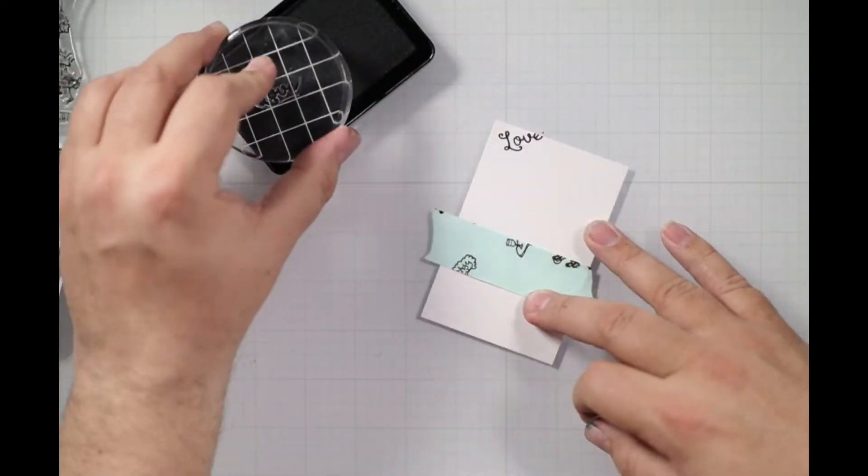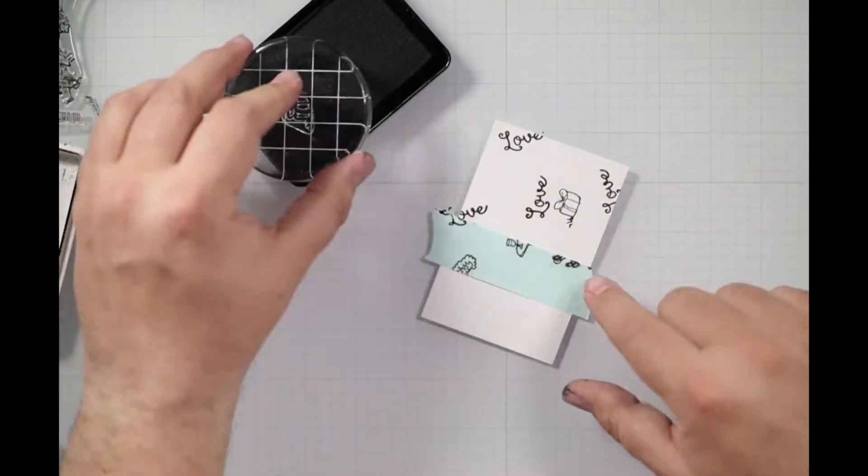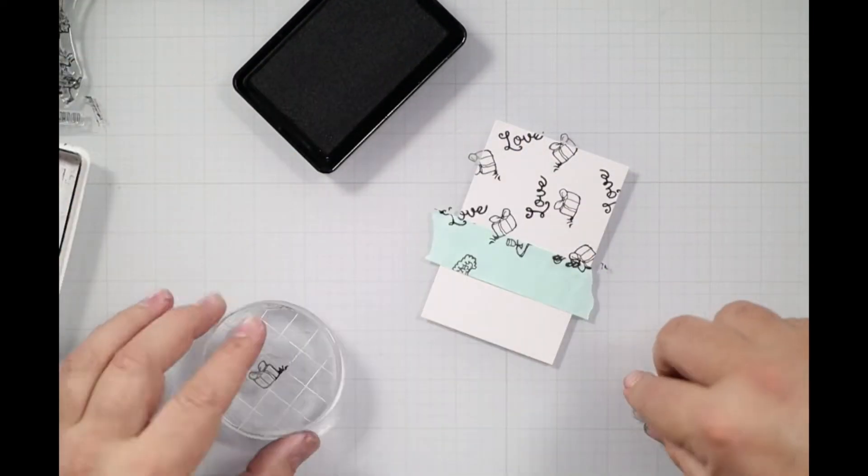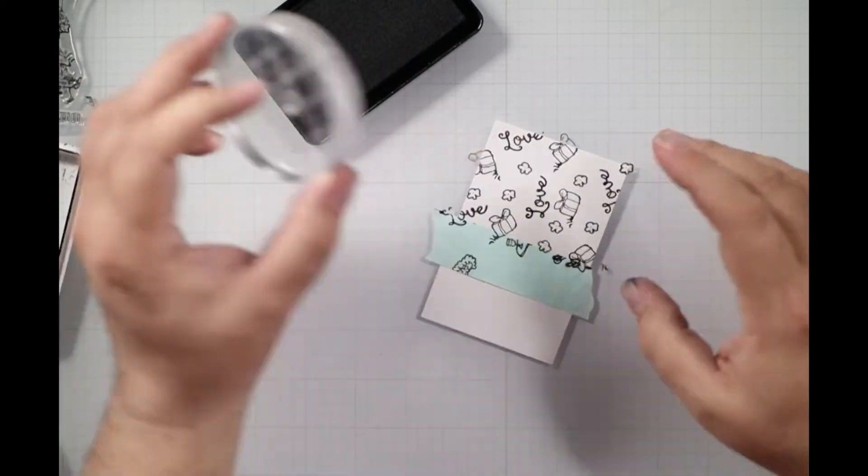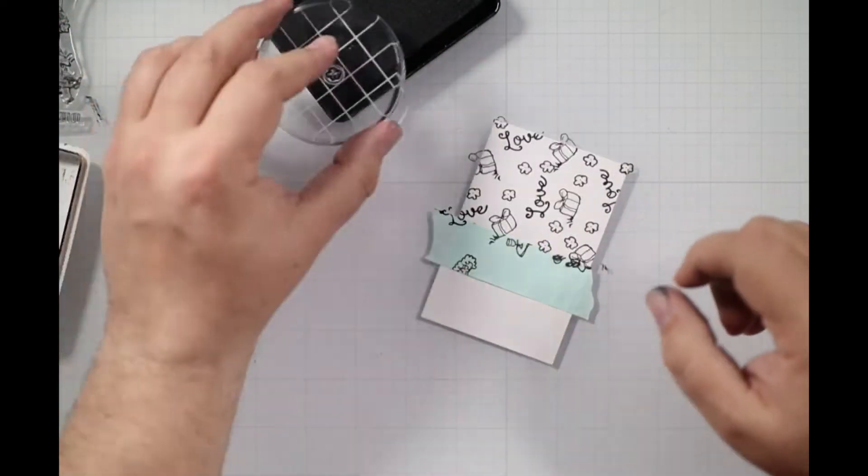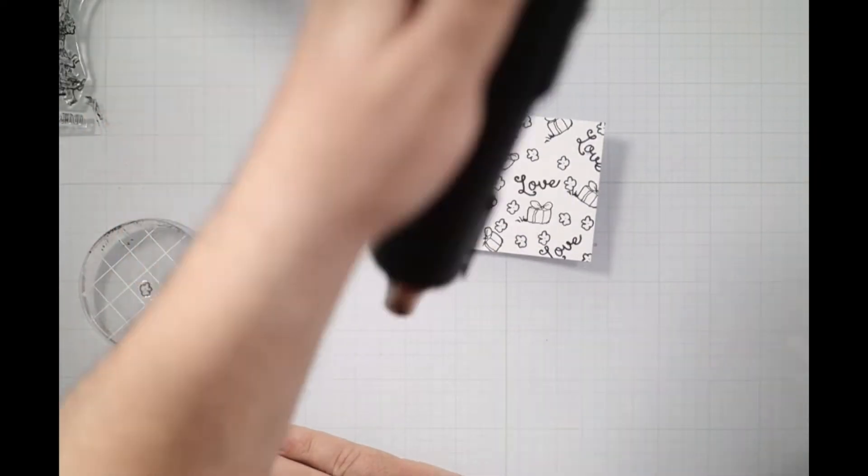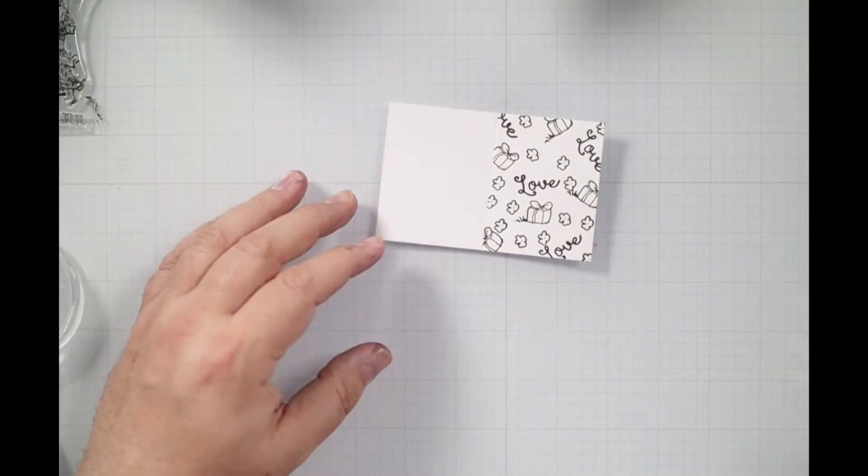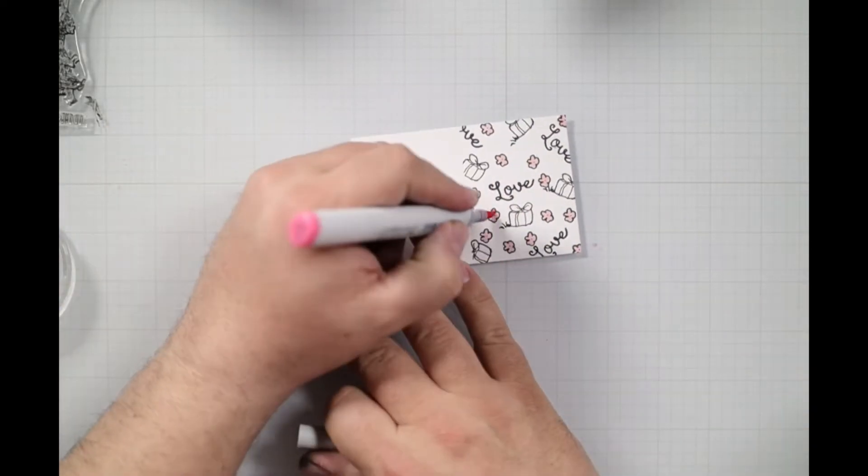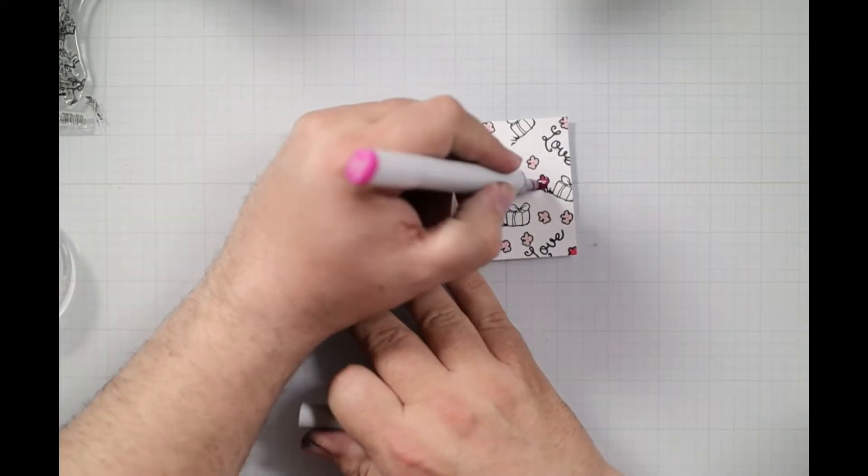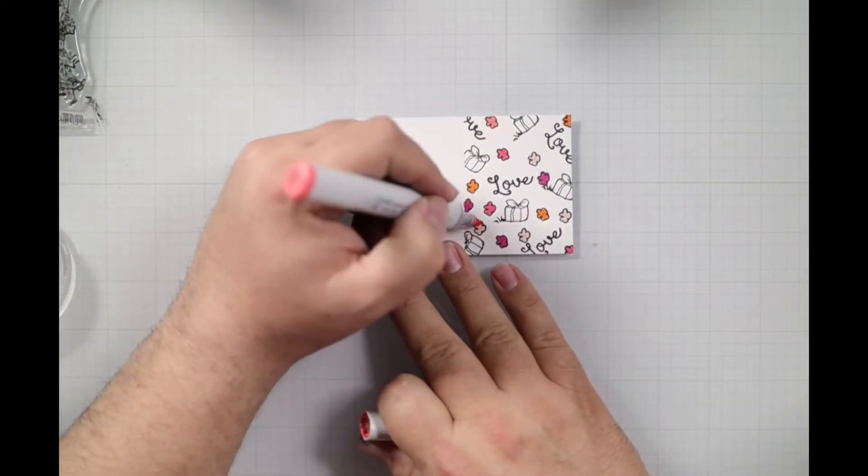Now I'm going to do one by just grabbing the smaller stamps in the set and making my own little kind of pattern paper on my mini card here. There's a little blossom in there, a little gift, the word love, and just stamping them all over and coloring them in with the same palette. Now my ink pad was a little juicy, so I heat set it before I used the Copic markers on it. You don't have to do that, but I did it just to be safe.